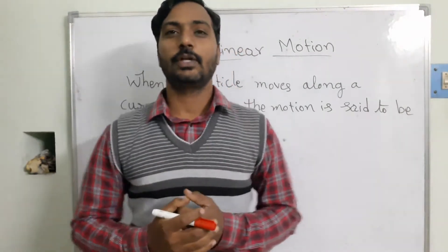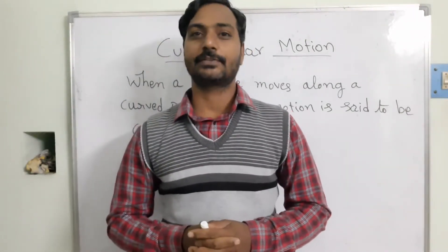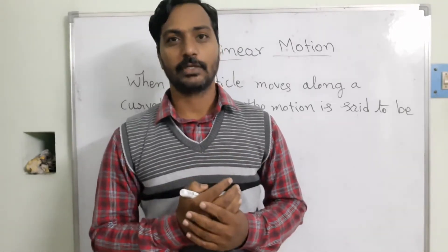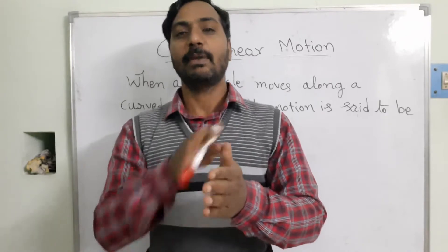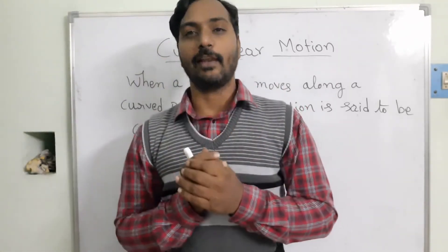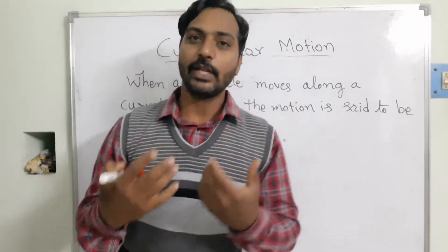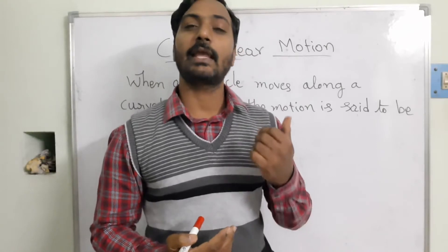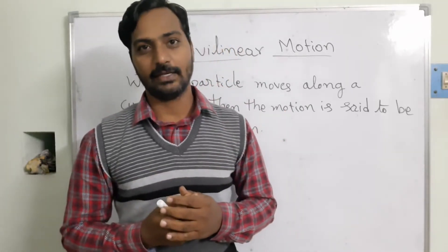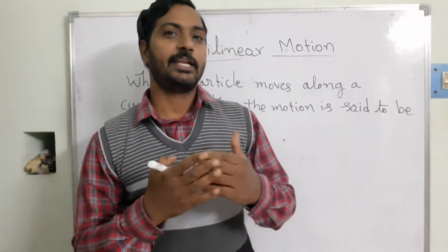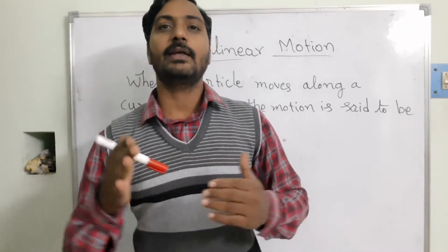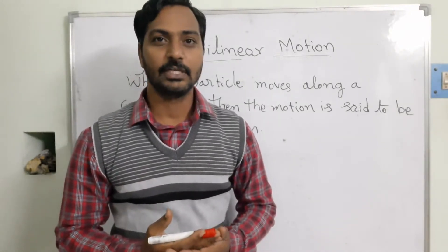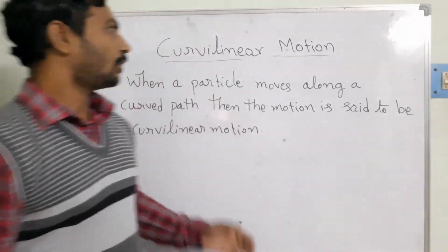Welcome to the engineering mechanics video lectures. So far we have seen particles moving in translatory or rectilinear motion — the object moving in a straight line, maybe horizontal, vertical, or inclined. We developed different types of equations and found field parameters like displacement, velocity, and acceleration. Now, if a particle is moving in a curved path rather than rectilinear motion, we need to find those velocities and accelerations. This topic is curvilinear motion.